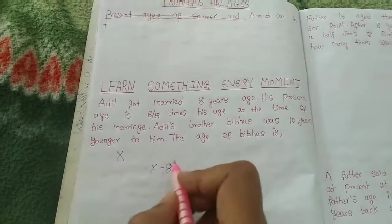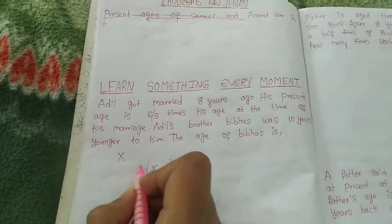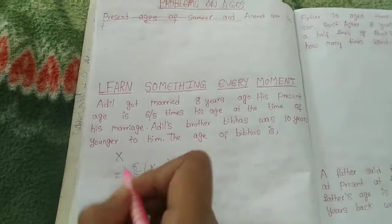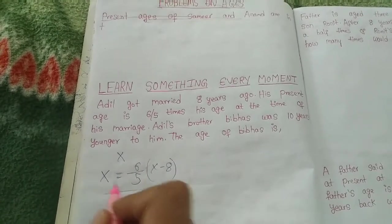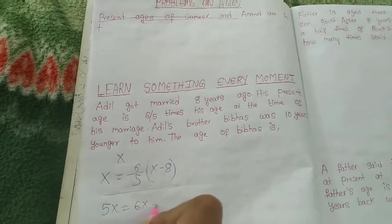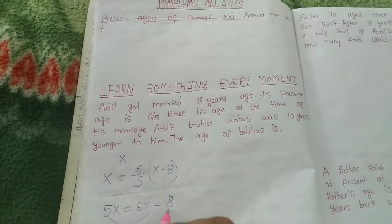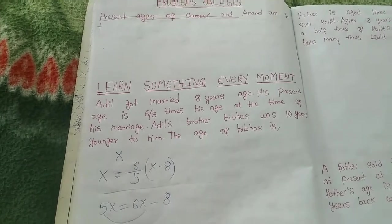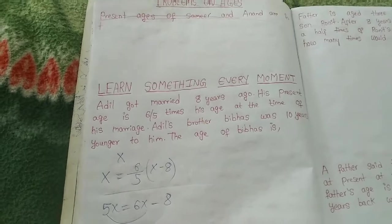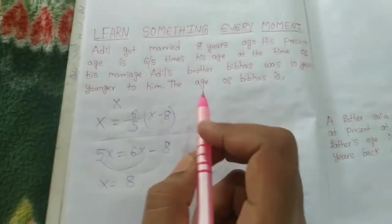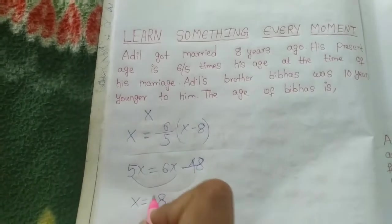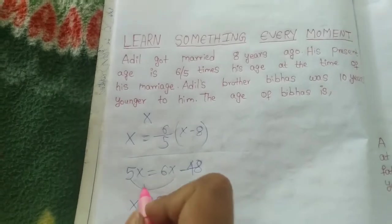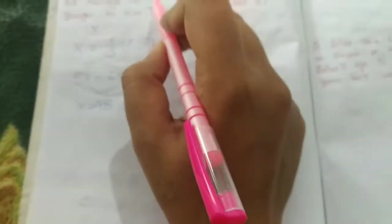His present age is six-fifths times his age at marriage, which means X equals six-fifths times (X minus eight). Solving: 5X equals 6X minus 48, so 6X minus 5X equals 48, which means X equals 48. So Adil's present age is 48.